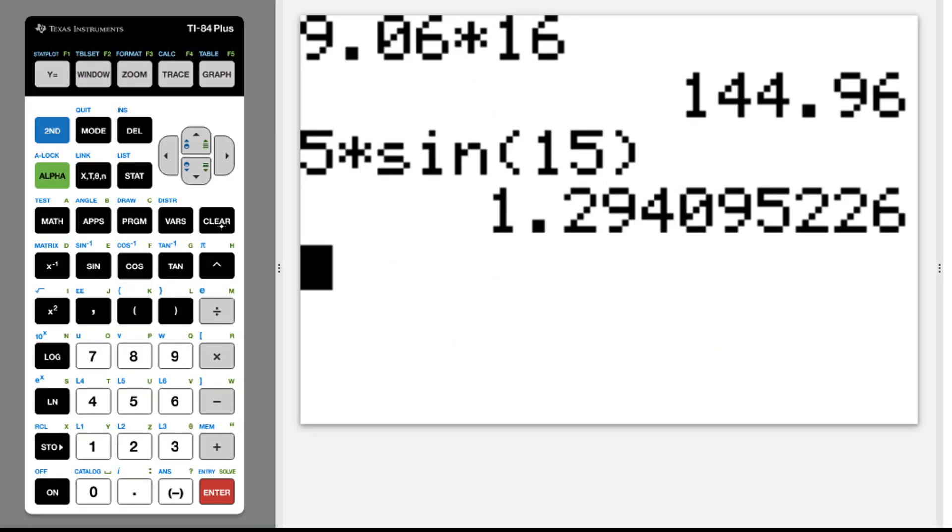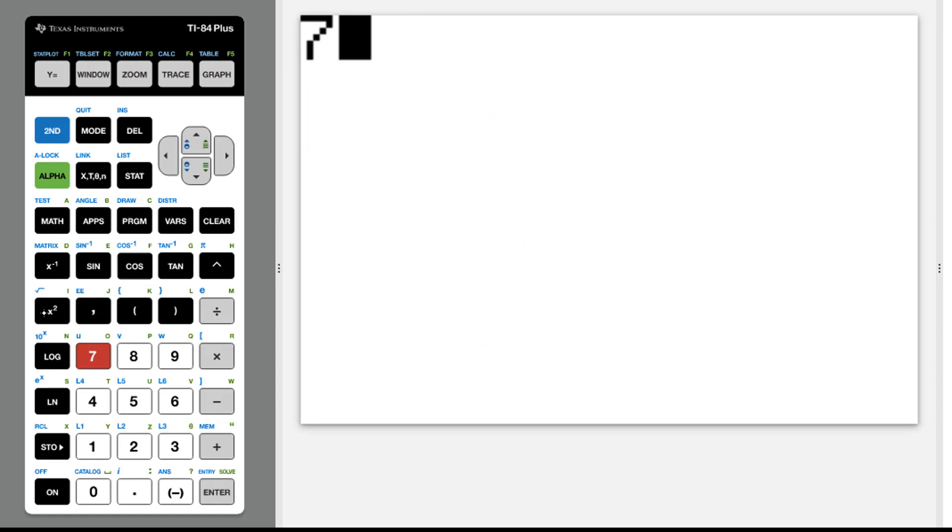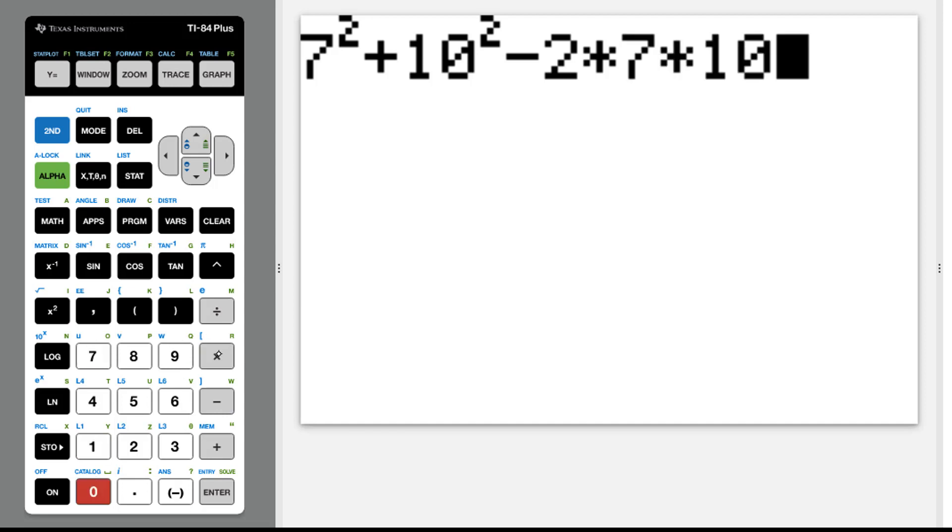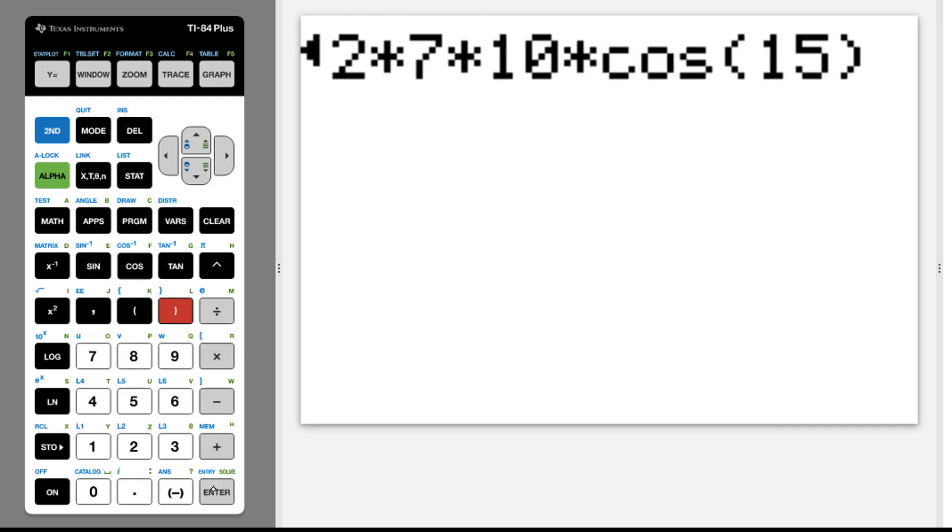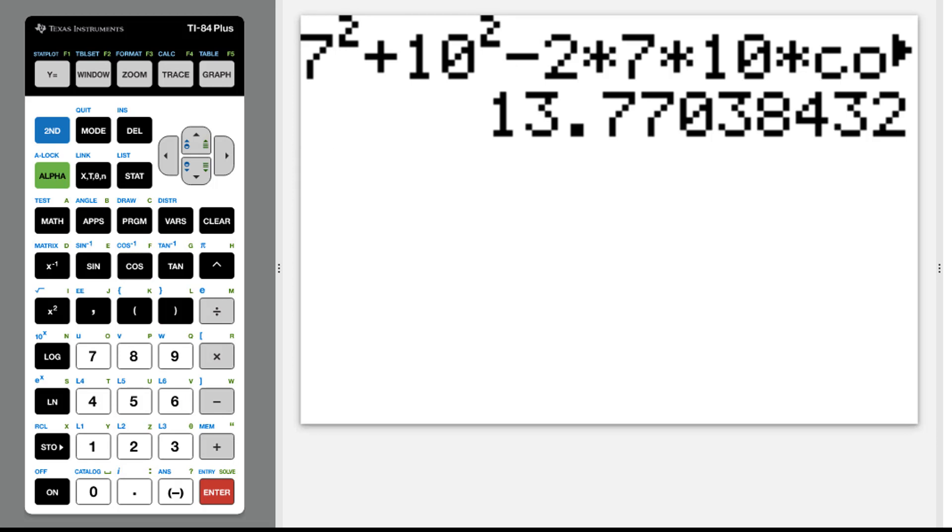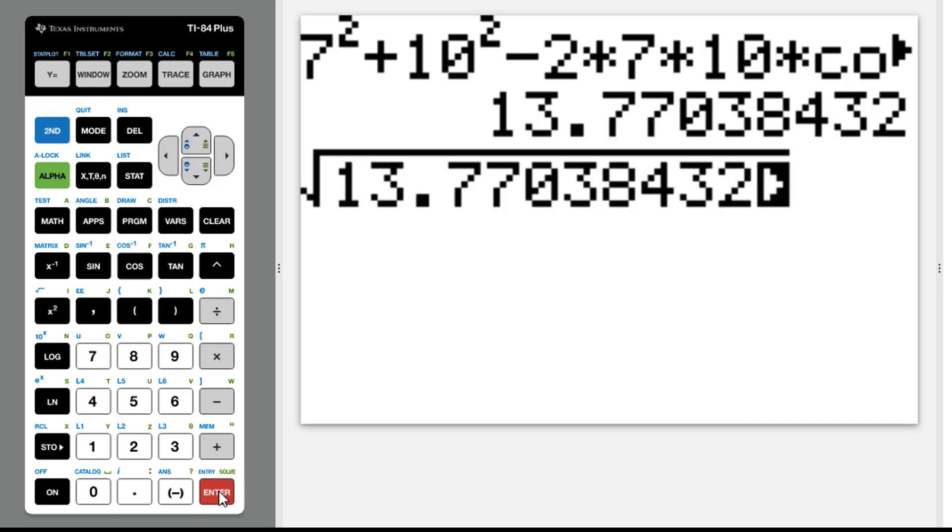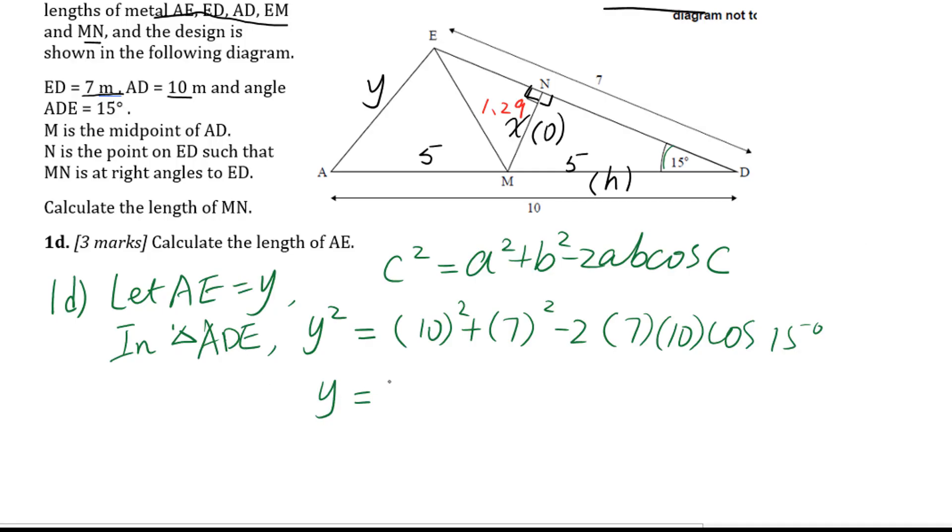Then you can get Y equals, go to calculator. Clear. So we have 7 squared plus 10 squared minus 2 times 7 times 10 times cosine 15. Enter. Then we go to second x squared. Enter. So your answer will be 3.71. Y equals 3.71 meters. Let's label here 3.71.